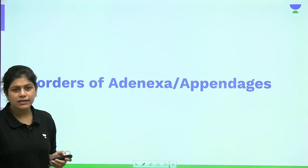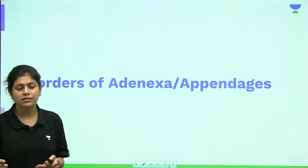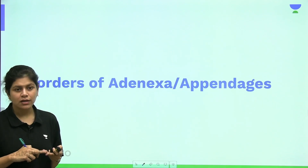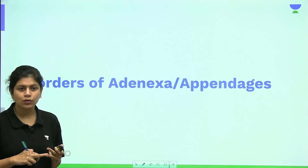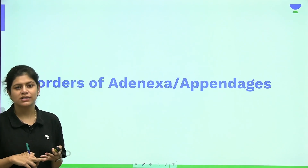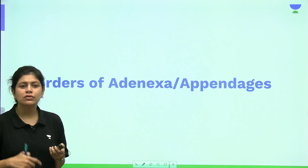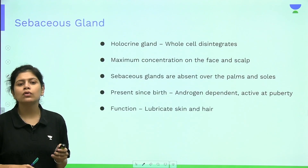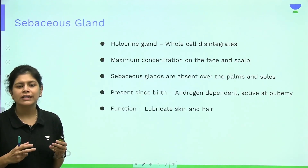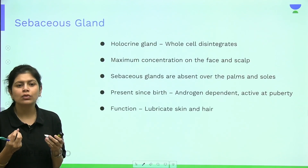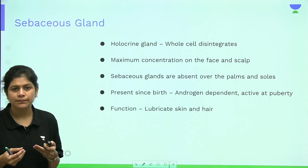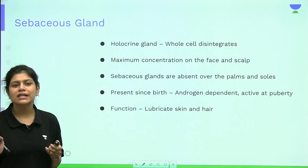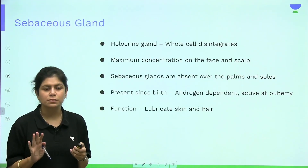We begin with the disorders of adnexa and appendages. The appendages in the skin include hair, eccrine sweat glands, apocrine sweat glands, and sebaceous glands. The sebaceous gland is a holocrine gland, meaning the whole cell disintegrates to release its contents. The maximum concentration of sebaceous glands is on the face and scalp, and they are absent over the palms and soles.